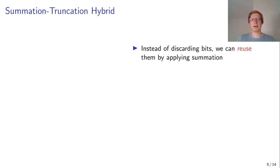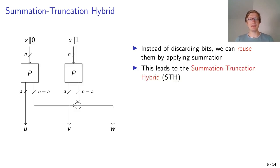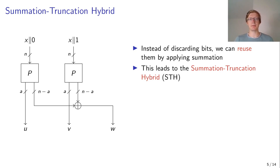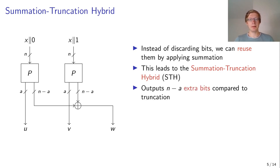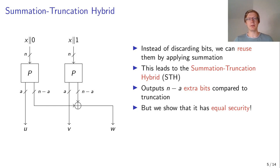However, the truncation discards some bits that still may contain some valuable entropy. So we can look at what happens when we reuse those bits using summation, and this leads to the summation truncation hybrid, or STH. In this construction, we have two consecutive calls to the PRP and first apply truncation, keeping the first A-bits of each call. But instead of discarding the other bits, we XOR them together to get some extra output W. This means we get N-A extra bits compared to just the truncation construction, and we show that this construction has equal security to the truncation construction. So we basically get those extra output bits for free, because we do not trade security for those extra bits.